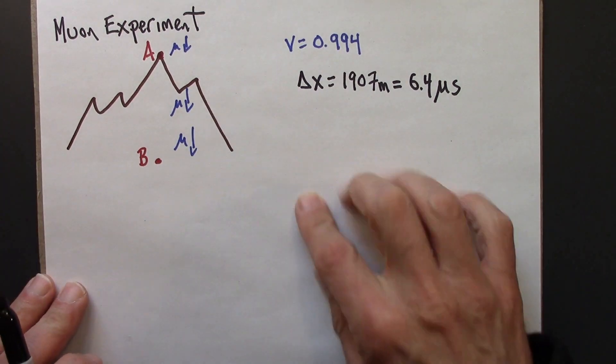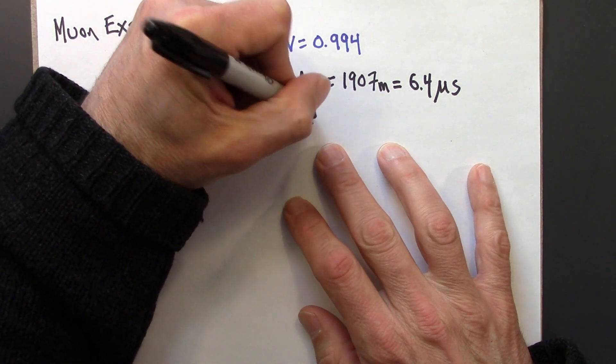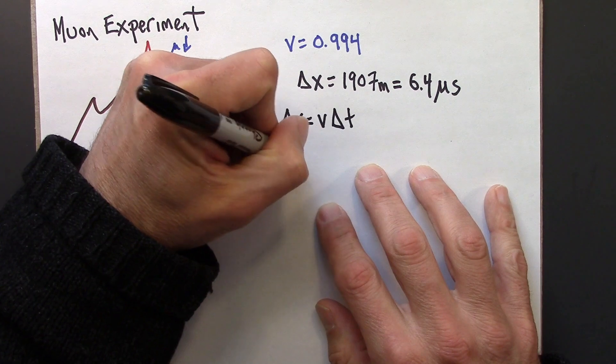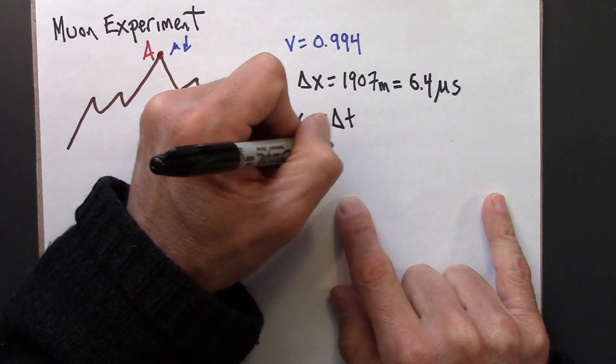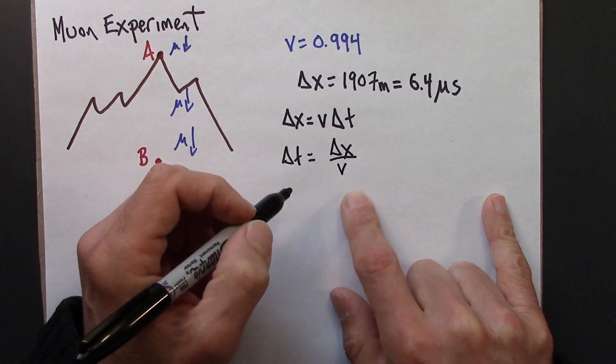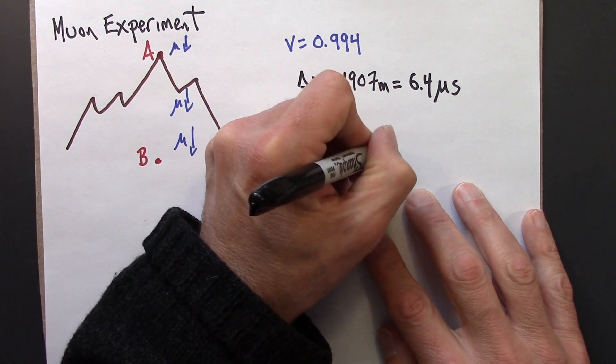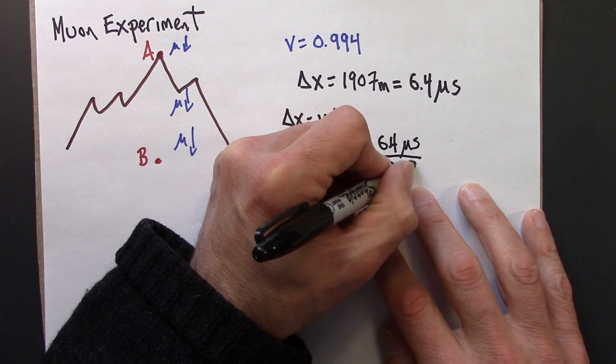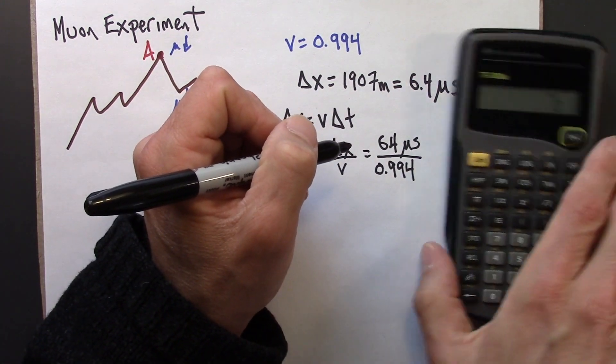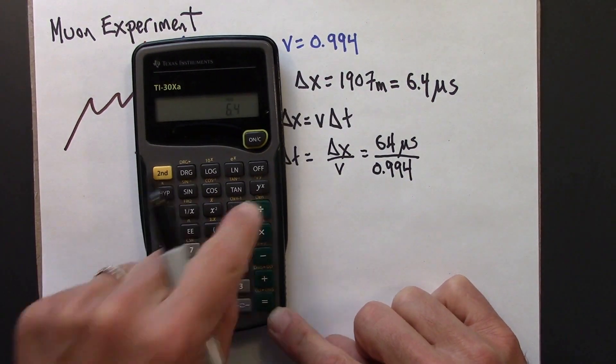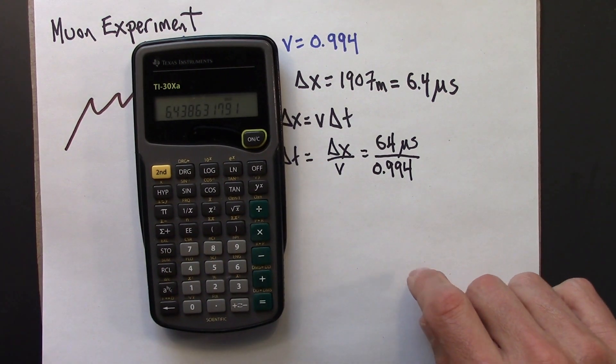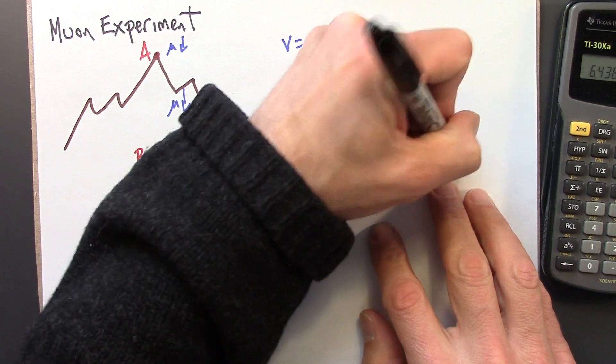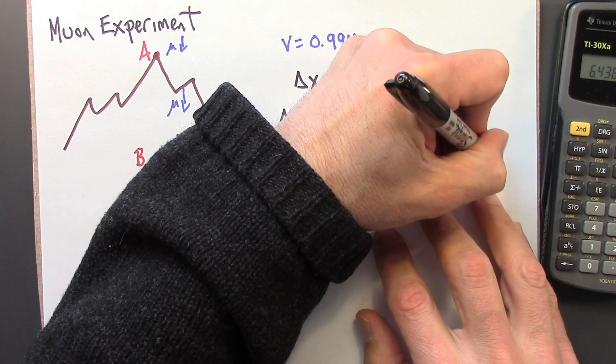How long does it take the muon to go from A to B? Well, we can figure that out because we know the speed. So delta x equals v delta t. Distance equals rate times time. Delta t is delta x over v. We know delta x and we know v. 6.4 over 0.994. 6.44 microseconds.